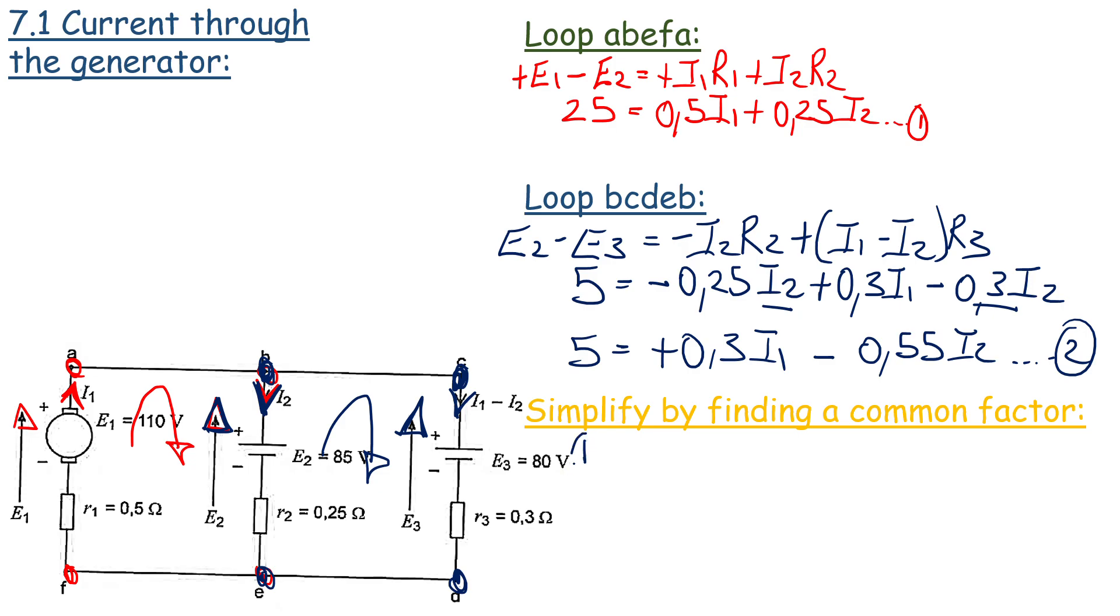Right, to simplify we're going to say equation 1 minus equation 2 and we will solve mathematically. Now, I want to cancel I1 over here. So what I'm going to do is I'm going to say 0.3 divided by 0.5 equals 0.6. So what we're going to do is we're going to multiply equation 1 by 0.6 in order to simplify. So 25 times 0.6 will give us 15. 0.5 times 0.6 will give us 0.3 I1. And then we have plus 0.15 I2.